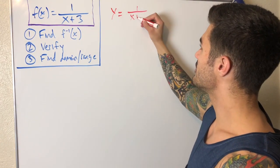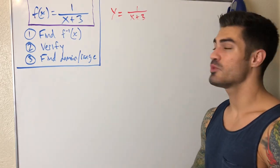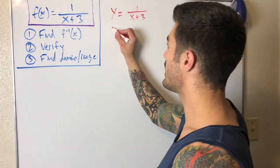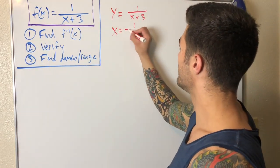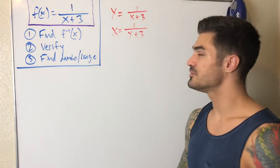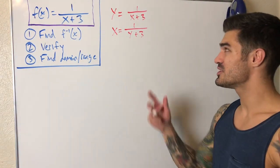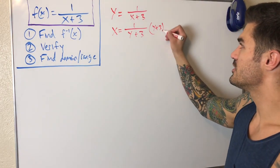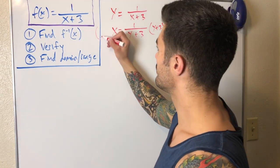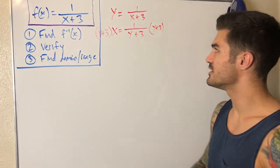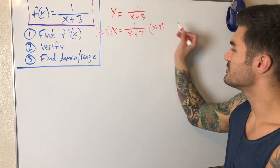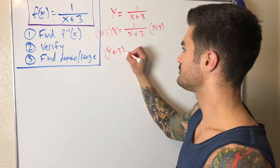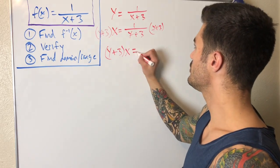Now I swap x and y — I don't do any algebra, I literally replace y with x and x with y. Now I'm solving for this new y. I'll multiply both sides by (y + 3) just to get rid of that fraction. That gets rid of the fraction and I'm left with (y + 3) times x equals 1.